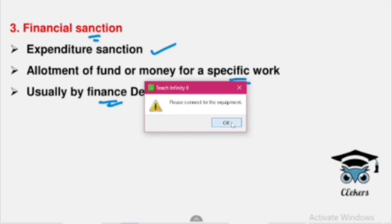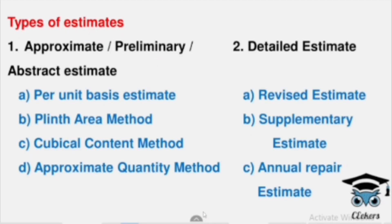Now let's go into the Estimate. For Administrative Sanctions, you prepare an Approximate Estimate — a preliminary estimate. For Technical Sanctions, you prepare a Detailed Estimate. In the case of the Approximate Estimate, we mainly have four methods to get the approximate estimate.